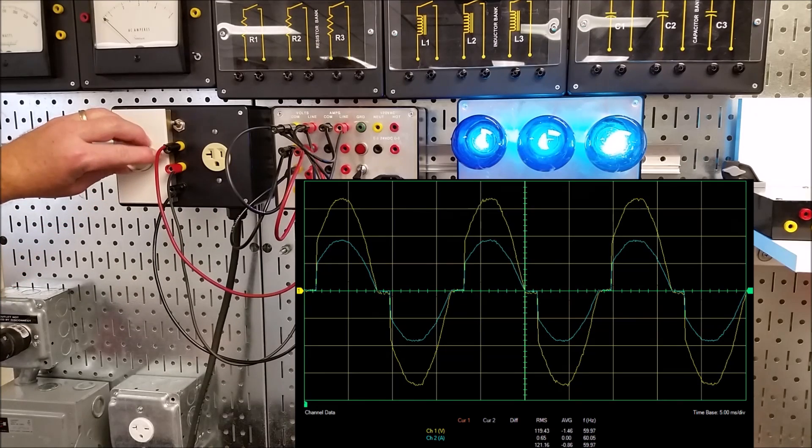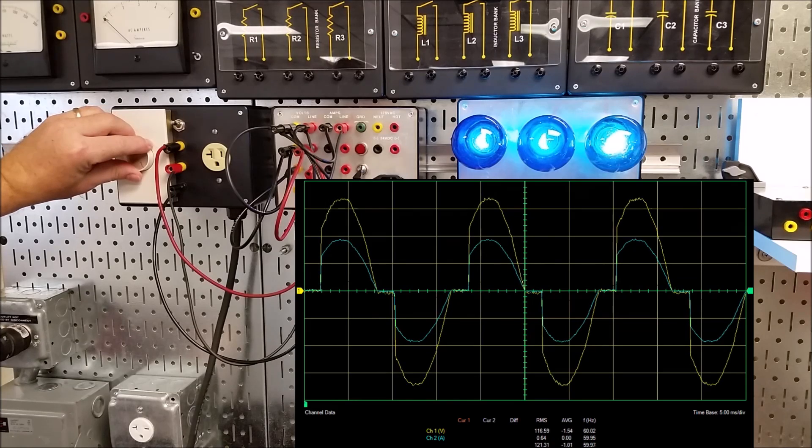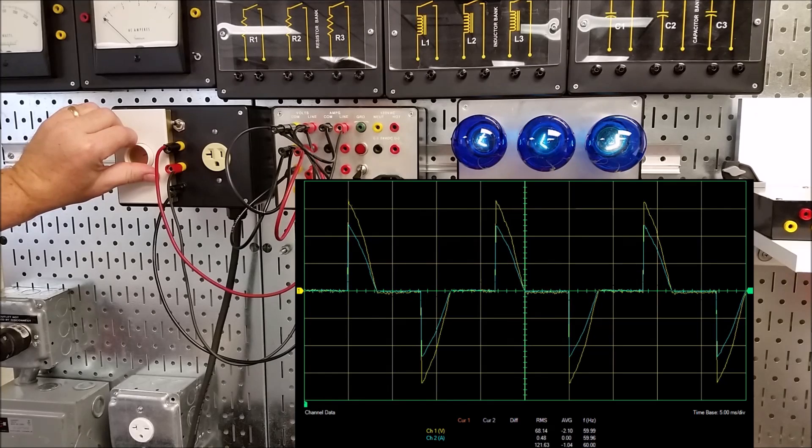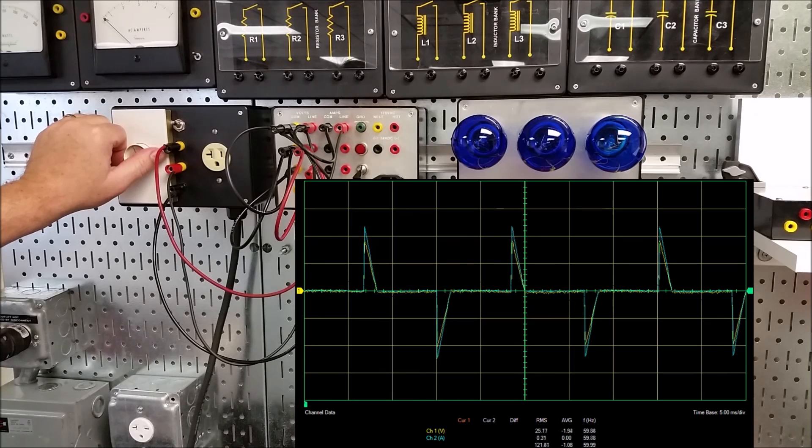We're at full brightness right now and I'm going to scale it back. Again, yellow is voltage and cyan or light blue is the current. And as I dim it way down, there's just a little sliver of energy left.